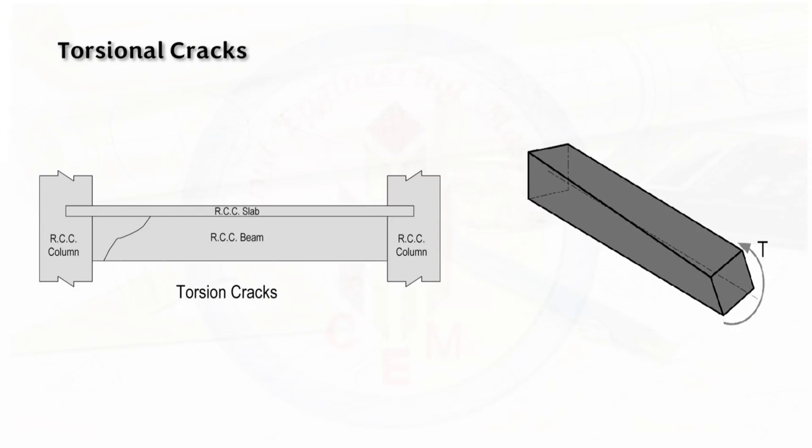Torsional cracks can occur due to twisting or torsional forces in beams. These are spiral shaped cracks that wrap around the beam. These torsional cracks tend to reduce the load carrying capacity of the beam and are often accompanied with other types of cracks.